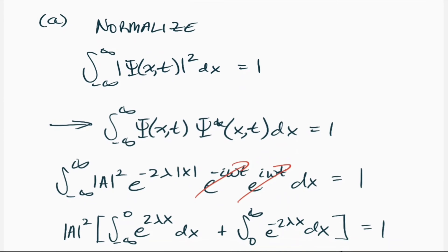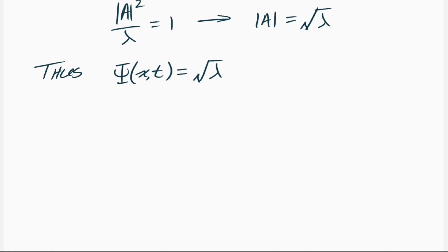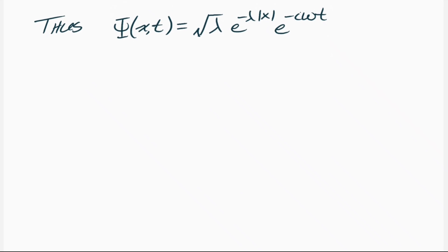Thus, the normalized wave function psi(x,t) is equal to √λ times e to the negative λ|x| times e to the negative iωt. That's our wave function now — we've solved for the constant A, which is all that normalization requires.